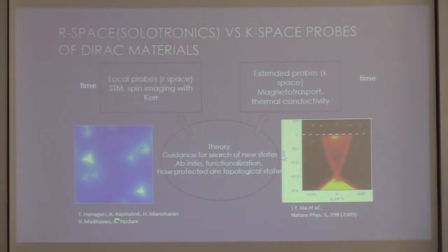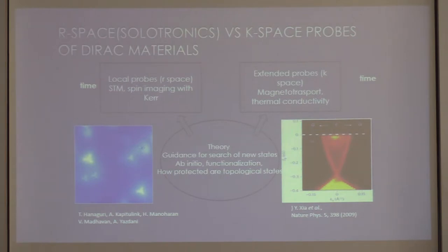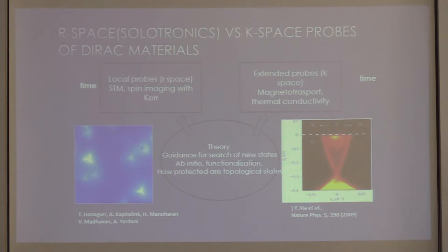In this particular case this is data from Hanaguri — Ali Yazdani and others have seen very similar things. The question is how do we interpret this alongside the observation of the Dirac cone. If I don't show you the blue panel, everything looks very nice and clean, but at the same time there is clearly something going on in real space. The motivation for us was to look at the effects of defects and probe the stability of the topological phase. I'm not arguing that the topological phase is unstable, but I'm arguing that there are very profound modifications of the electronic spectra at low energies for Dirac nodes, regardless of whether it's a topological phase or not.